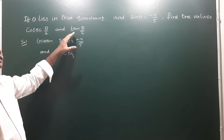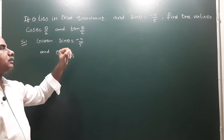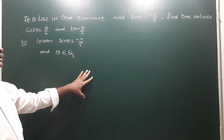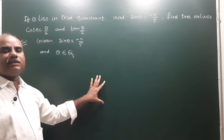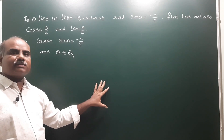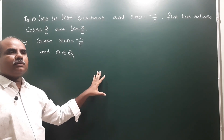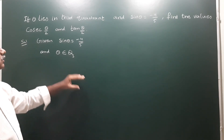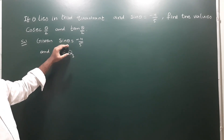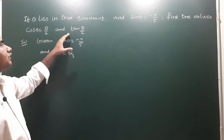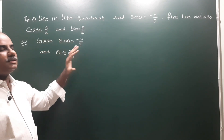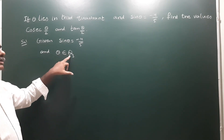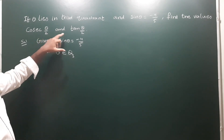To find sin(theta/2) and cos(theta/2), we need the value of cos theta, because the formula for sin(theta/2) is square root of (1 minus cos theta) divided by 2, and the formula for cos(theta/2) is square root of (1 plus cos theta) divided by 2. We only have sin theta, so we must find cos theta.